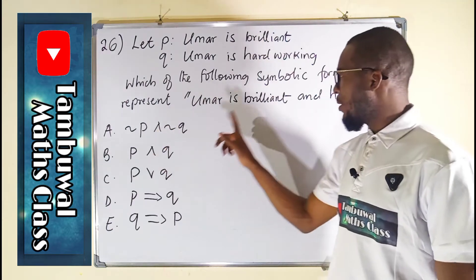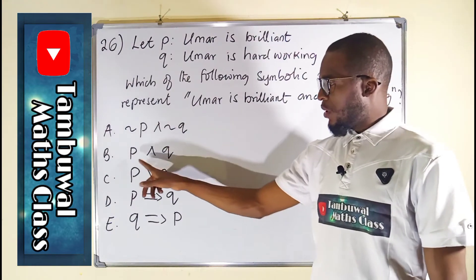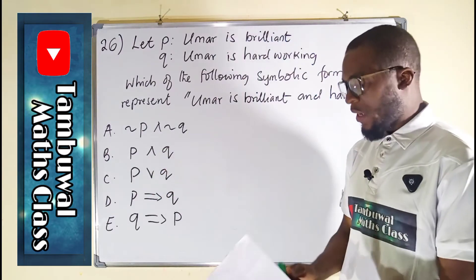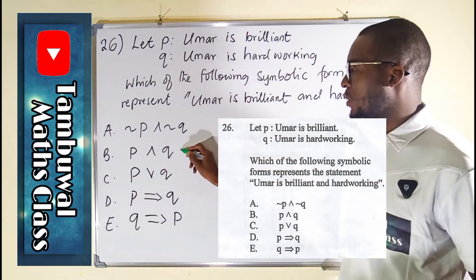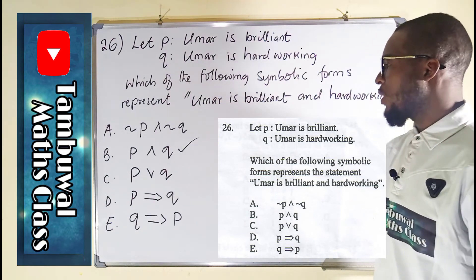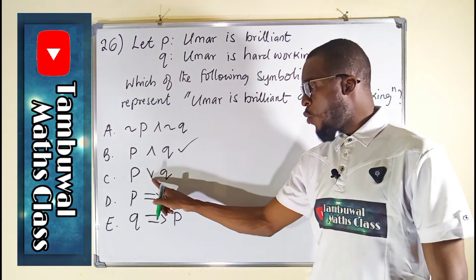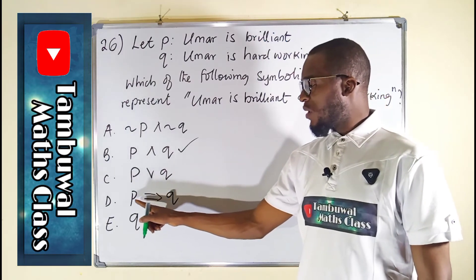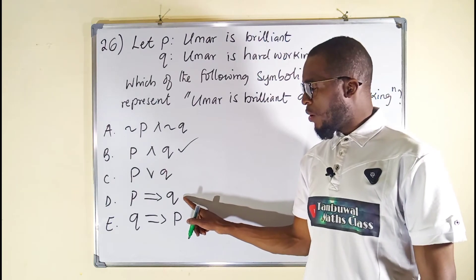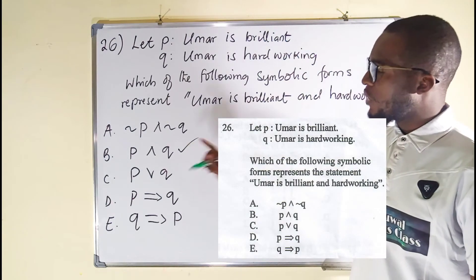This is an 'and' statement, but the negation here disqualifies it. We have P which stands for 'Umar is brilliant' joined by an 'and' statement. The correct option represents 'Umar is brilliant and hard-working.' The other options say 'Umar is brilliant or hard-working,' 'Umar is brilliant provided that he is hard-working,' and 'Umar is hard-working provided that he is brilliant.' So this is the right option.